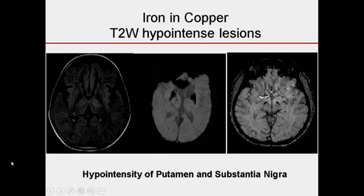This is one term known as iron in copper disease. The black areas you are seeing are because of iron deposition. Any chronic brain disease nowadays has been found to have iron deposition, and in Wilson's it happens earlier compared to similarly aged children. This is seen in the substantia nigra.